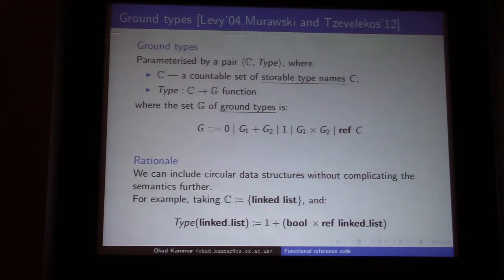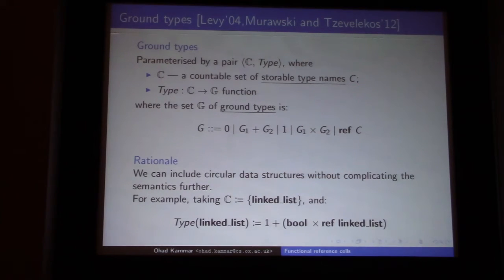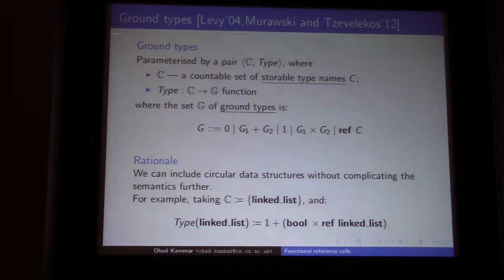So how do ground references work? I'm using a trick I learned from Paul Levy — you can read his book or paper about this. The setting: you have a parameterization of your language where you have a set C of storable type names, ranging over by this Roman C, and a function that assigns to each type name a ground type. The ground types are just the empty type, sums, the unit type, products, and then reference to a type name. This setup allows me to talk about recursive or circular data structures without incorporating recursion into the semantics — set-theoretic semantics even with circularity.